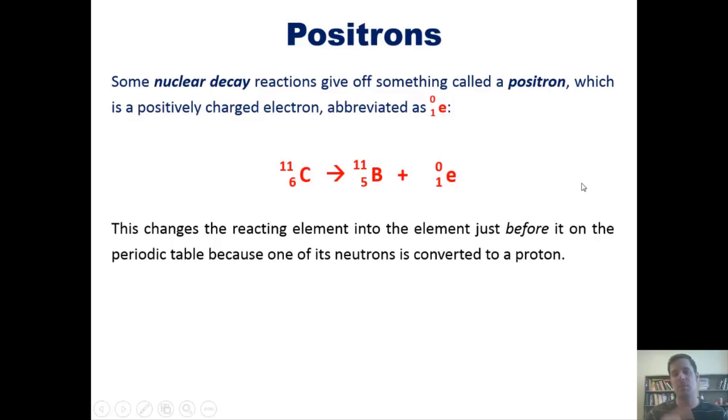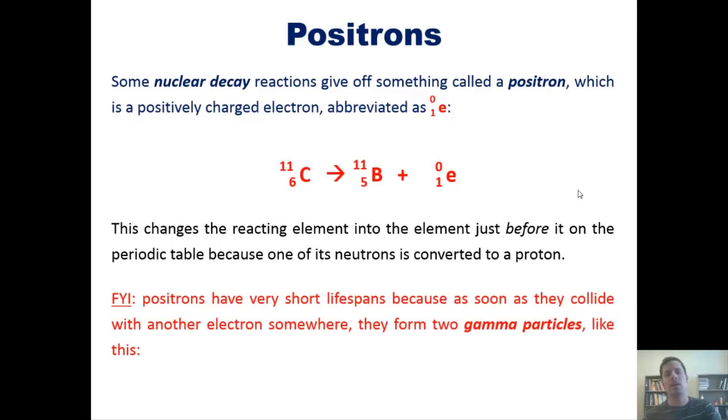Here's one more important piece of info: positrons have very short lifespans because as soon as they collide with another electron, they form two gamma particles. You can see mathematically I've got my positron colliding with an electron: one plus negative one equals zero, yielding two gamma particles, which are bad because they'll turn you into a heaving green super-powered monster. In reality, they'll just kill you.